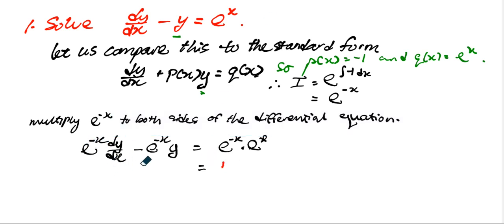The left-hand side, actually, if you really look at the left-hand side, consider g, a function g, equal to e to the power of negative x times y. And if you do the implicit differentiation here,